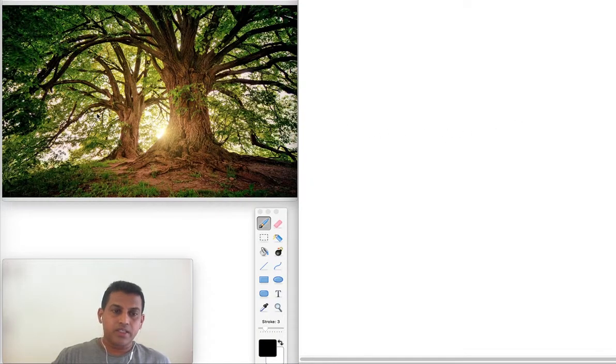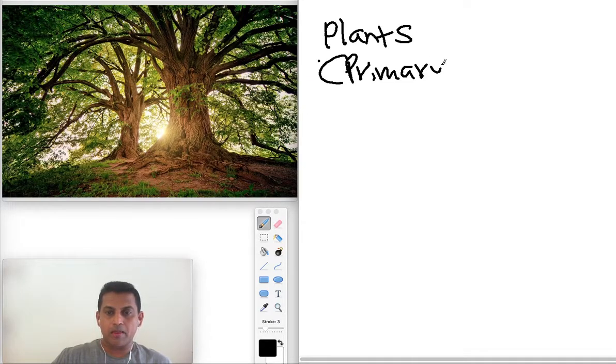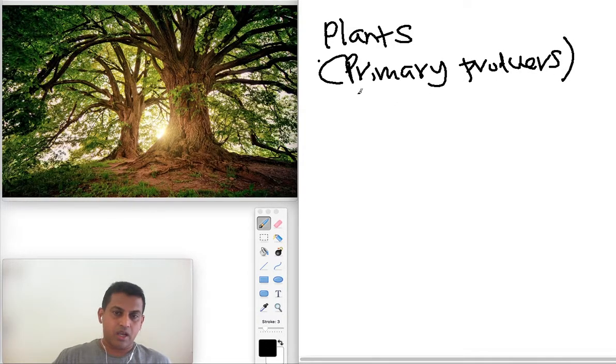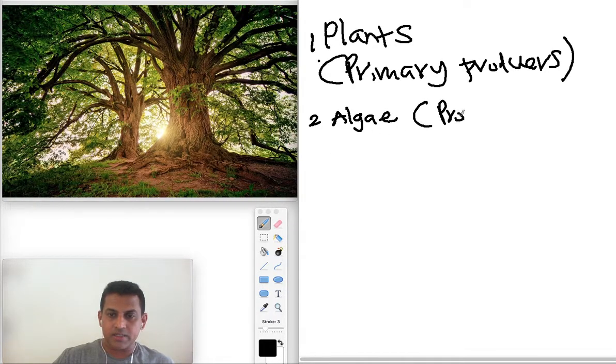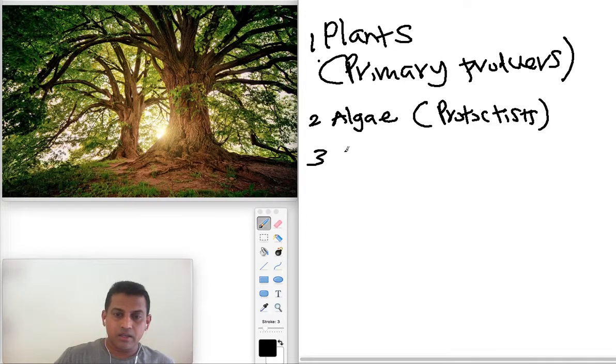Now you can see in this picture the plant. They are the primary producers. What does that mean? They produce food for all. Plants, and apart from plants, some algae that come under protists and bacteria.